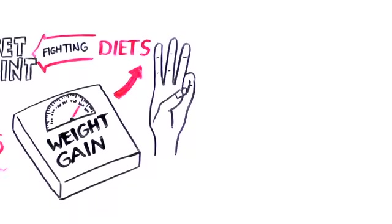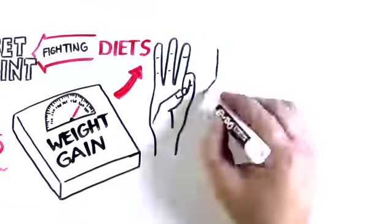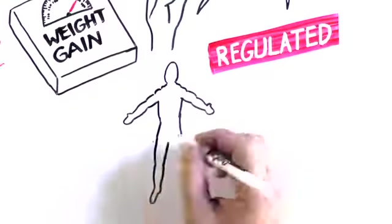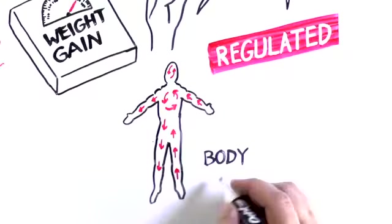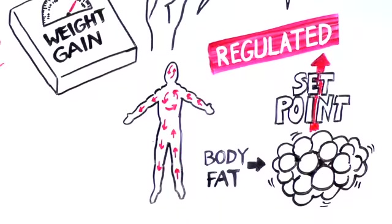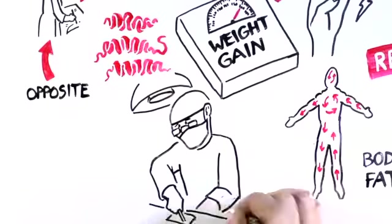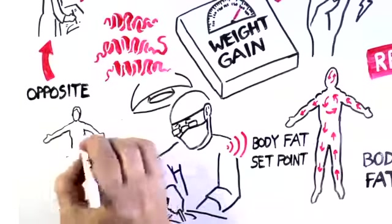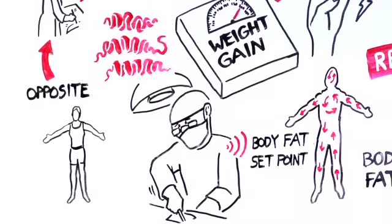So here are three things you can take away from all of this. One, energy balance is complex and highly regulated. Two, obesity is a disease where the complex system that regulates body fat may dysregulate to a set point that is too high. Three, bariatric surgery may work by changing the signals that regulate body fat set point, enabling patients to successfully lose weight and keep it off.